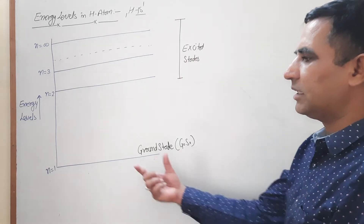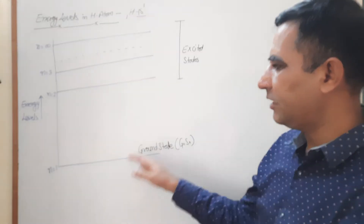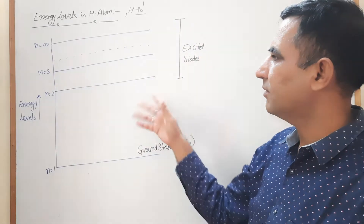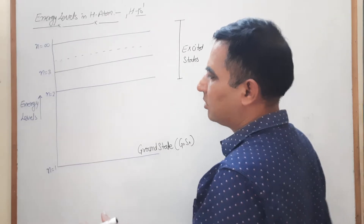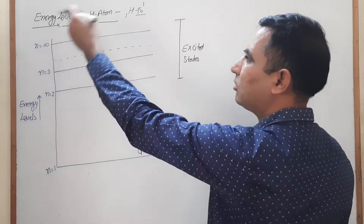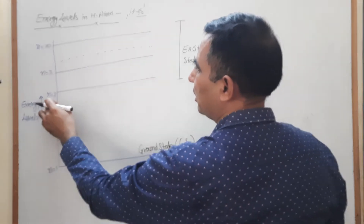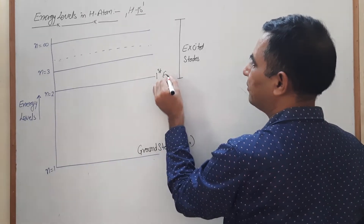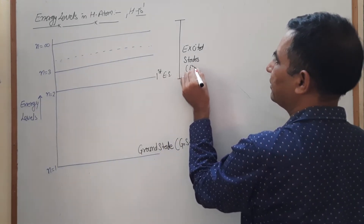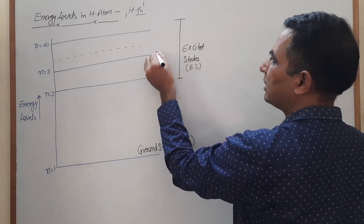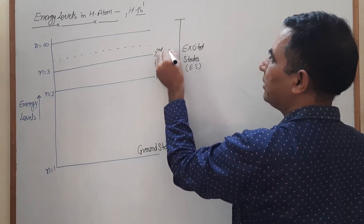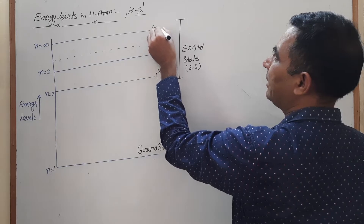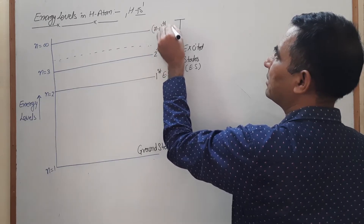For hydrogen, n equals 1 is the ground state, and all the rest are known as excited states. n equals 2 is known as the first excited state; n equals 3 is the second excited state; and so on. The infinite energy level is known as the (n minus 1) excited state.